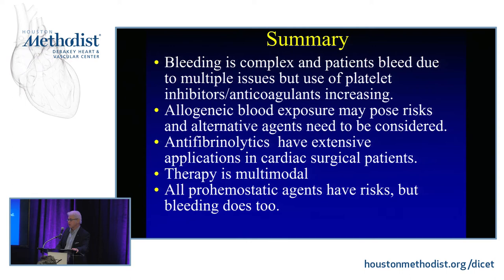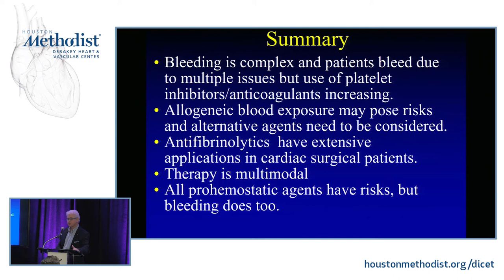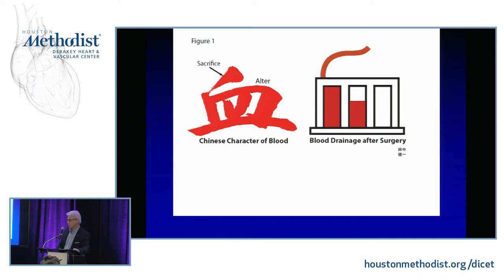In summary: bleeding is complex, patients bleed from multiple issues, anticoagulants are ubiquitous. Allogeneic blood poses risk, and pharmacologic strategies are important. Antifibrinolytic therapy is important, and therapy should be multimodal. Remember, all pro-hemostatic agents have risk — but bleeding does too. The kanji character for blood represents the sacrifice of the altar and all the bleeding — it looks a lot like a pleur-evac, and how art imitates life.